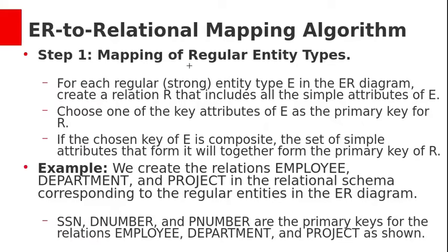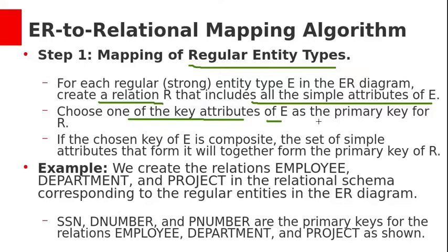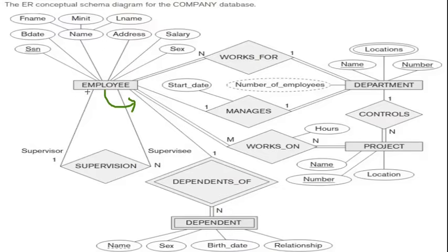First step is conversion of regular entity types. For each regular or strong entity type in the ER diagram, create a new relation R that includes all the simple attributes of entity type E. Then choose one of the key attributes of entity type E as the primary key for the newly created relation R. If the chosen key of E is composite, the set of simple attributes that form it will together form the primary key of R. Strong entity means the entity which has a primary key. In the company database, employee has primary key SSN, department has primary key attributes name and number, and project also has primary key attributes name and number. These three are the strong entities.